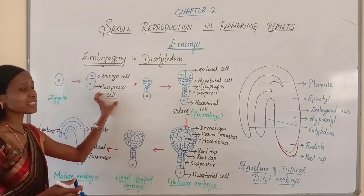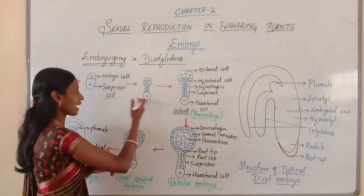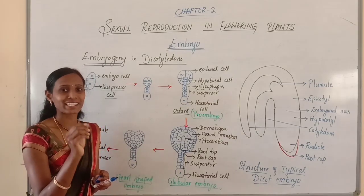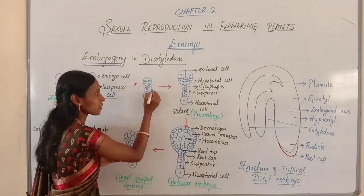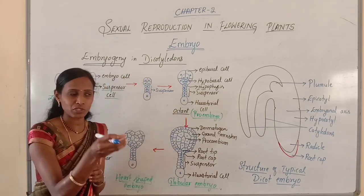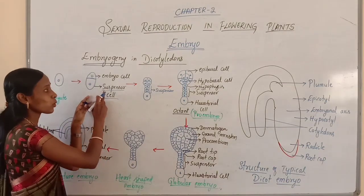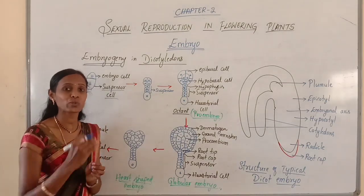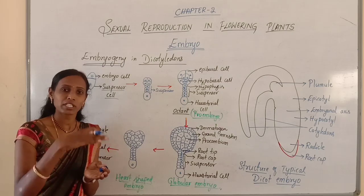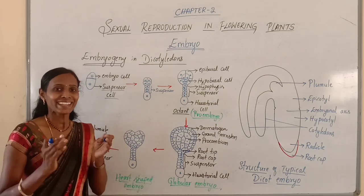The suspensor cell will undergo transverse divisions a few more times, resulting in the formation of a filamentous suspensor of 6 to 10 cells. The basal cell is called the suspensor cell because it gives rise to this suspensor. This suspensor cell divides transversely a few more times resulting in a filamentous suspensor of 6 to 10 cells.